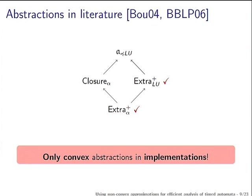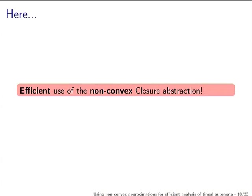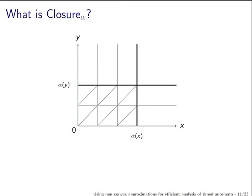So far I have been talking about history. In this talk we will see how to use this non-convex closure abstraction. It turns out that this is the first non-convex abstraction to be efficiently used. What is closure? This diagram, which should be familiar to everyone who knows about timed automata, shows the division of the XY plane into regions as defined in the very first paper by Alur and Dill.